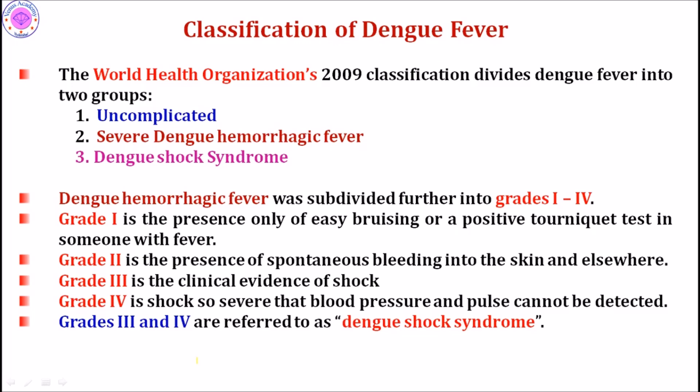The WHO in 2009 classified dengue as uncomplicated and severe. Dengue hemorrhagic fever is divided into four grades: Grade 1 is simple fever with a positive tourniquet test; Grade 2 is spontaneous bleeding into the skin; Grade 3 is clinical evidence of shock; Grade 4 is shock so severe that blood pressure and pulse cannot be detected. Grades 3 and 4 are referred to as dengue shock syndrome.